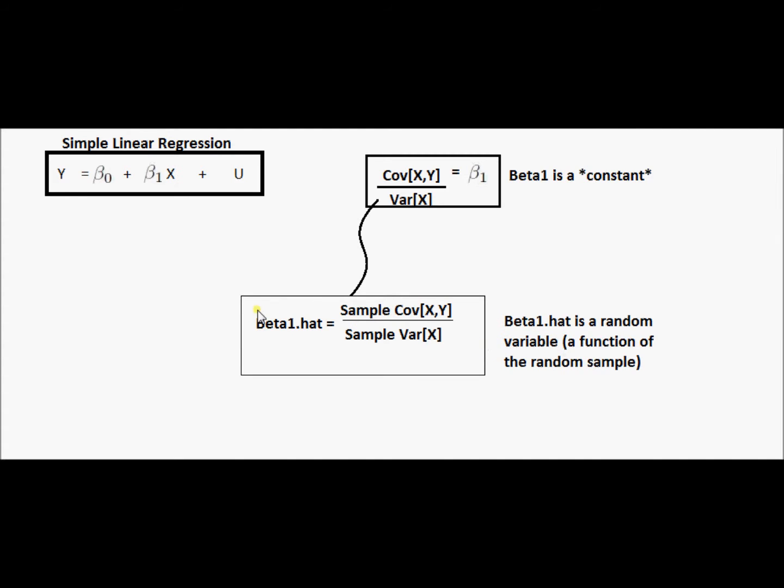Beta one hat is a random variable. It has some properties that are nice in that this random variable is a good approximation to this beta one constant. So under some conditions, this beta one hat random variable will be unbiased for this beta one constant. Under other conditions, you can think of this beta one hat as having a nice normal distribution. Which is going to be useful for conducting inference about statements about what is the true beta one out there.